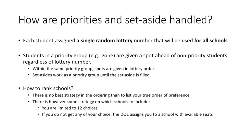The way the system handles priority groups such as zones is that it considers all the students in a priority group are given a spot ahead of students who are not in the priority group. Within the same priority group, the spots are given in lottery order. So for instance, if a zone school doesn't have enough spots for all the zone students, it will assign the spots based on the lottery numbers of the students. The set-asides are a special case of lottery which work as a priority group until the set-aside is filled. Again, there is no best strategy in the ordering other than to list your true order of preference. There is no way to game the system to force it to give you a better school by changing the way you order schools.